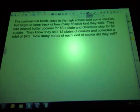This problem says the commercial foods class in the high school sold some cookies but forgot to keep track of how many of each kind they sold. They had peanut butter cookies for $3 a plate and chocolate chip cookies for $4 a plate. They know they sold 12 plates of cookies and collected a total of $43. How many plates of each kind of cookie did they sell? So you can see that we might have to do this one day or something like this in our life.